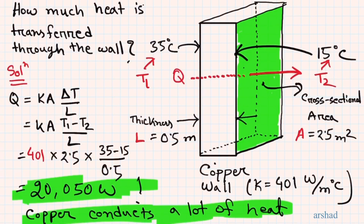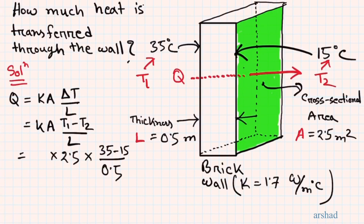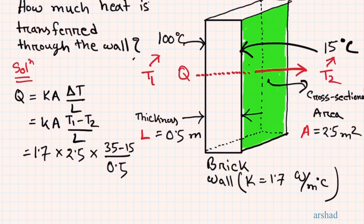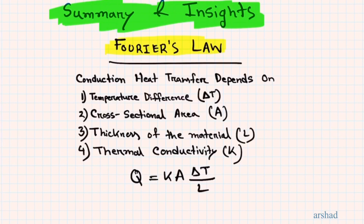Restoring all original parameters and changing only the temperature: keeping T2 = 15°C but increasing T1 from 35°C to 100°C. Intuitively, more heat must be transferred because a greater temperature difference drives more heat flow — the material must release more heat for the higher-temperature side to maintain equilibrium with the 15°C side.